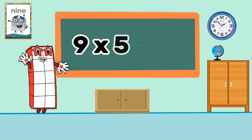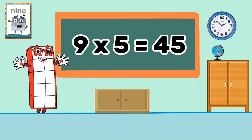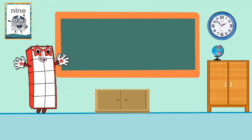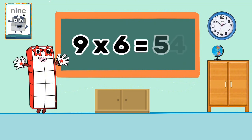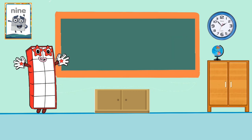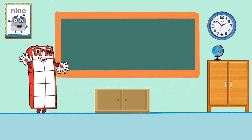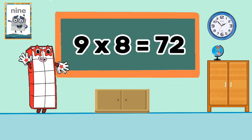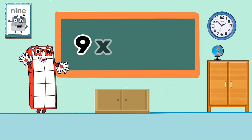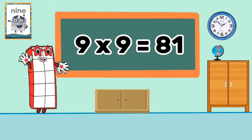9 times 5 equals 45. 9 times 6 equals 54. 9 times 7 equals 63. 9 times 8 equals 72. 9 times 9 equals 81.